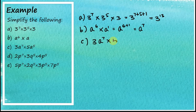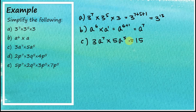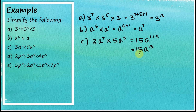For (c): 3a to the power of 7 times 5a to the power of 5. In algebra, when we have coefficients like 3 and 5, we multiply the coefficients first: 3 times 5 equals 15. Then a to the power of 7 times a to the power of 5 equals a to the power of 7 plus 5, giving us 15a to the power of 12.